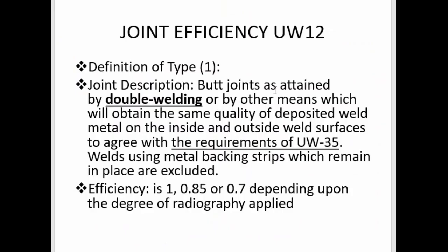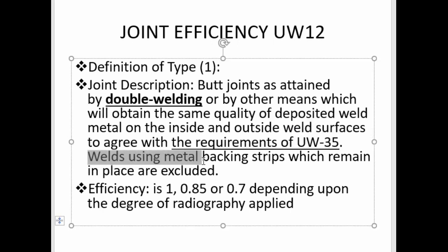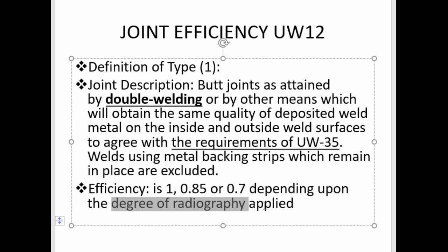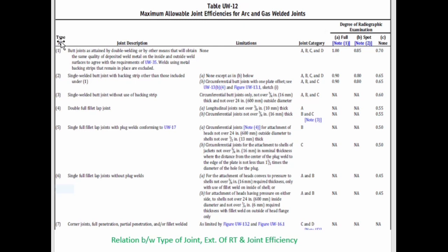Type 1 weld joints are butt joints attained by double welding, or by other means that obtain the same quality of deposited weld metal on both inside and outside weld surfaces, meeting the requirements of UW-35. Welds using metal backing strips that remain in place are excluded. The efficiency ranges from 0.70 to 1.0 depending on the degree of radiography applied. If full radiographic examination is conducted, Type 1 gives a joint efficiency of 1.0; spot radiography gives 0.85; and no radiography gives 0.70.